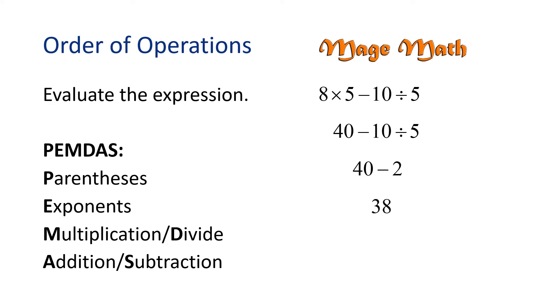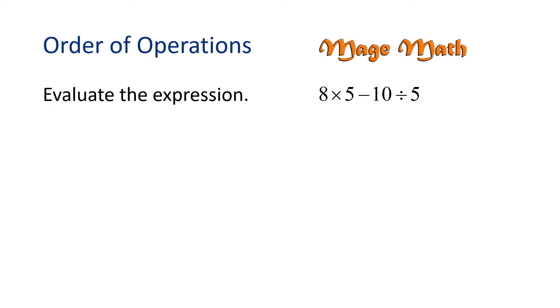If we did not follow the order of operations, the solution would be totally different. Let's see. If I would just work the problem from left to right, we would still start out with 8 times 5, which is 40. But then we would subtract. 40 minus 10 is 30. And 30 divided by 5 is 6. 6 is not the correct answer because we did not follow the order of operations.